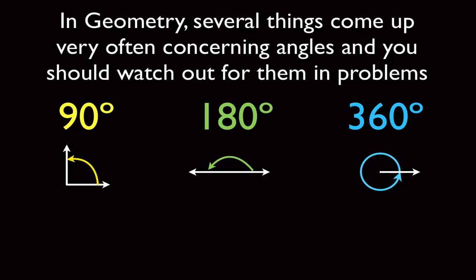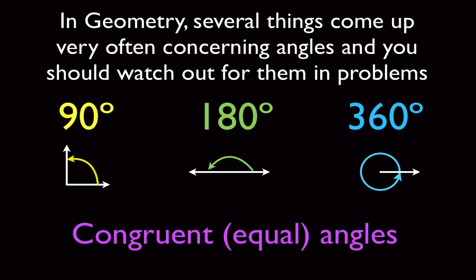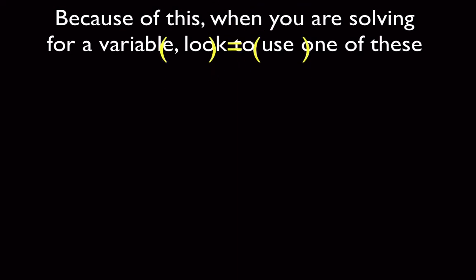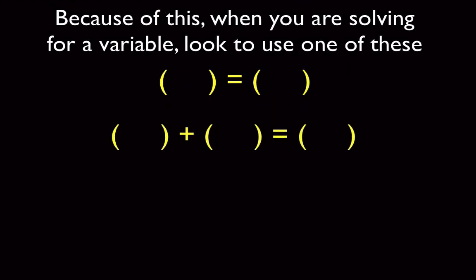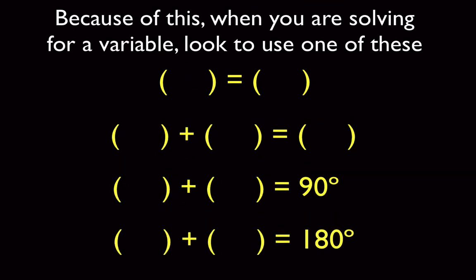One thing you can assume in geometry is that straight lines are straight lines. In Euclidean two-dimensional geometry, straight lines are straight lines as they appear. The fourth thing we have is congruent angles — angles that are equal to each other. Because of this, there are really only a few possible things that come up: a pair of angles equal to each other, two angles that add up to a third angle, two angles that add up to 90, or two angles that add up to 180. These four are the occurrences we see most often.